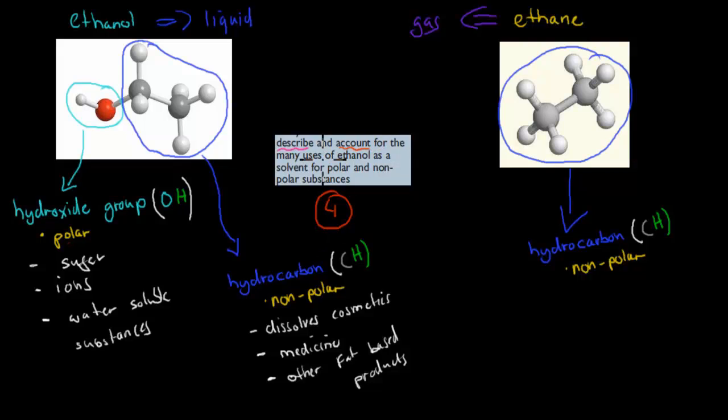Describe and account for the many uses of ethanol as a solvent for polar and non-polar substances. Describe what kind of uses they have, and account for why they have these uses. Here we've got an ethanol molecule. Here we have an ethane molecule. First of all, it has two different types of groups. It has this hydroxide group, which is the OH group. And it also has this hydrocarbon chain, which is just carbons and hydrogens.